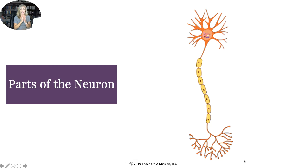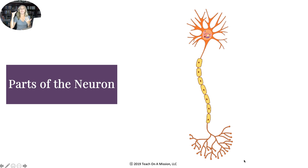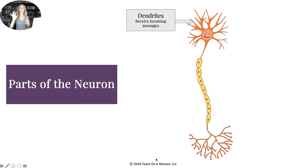First, you have to understand what a neuron is. A neuron is simply a nerve — that's all it is. It's a nerve in your brain forming the networks that allow you to think, as well as throughout your body.